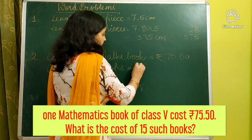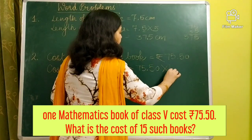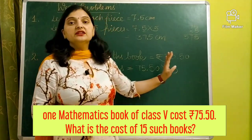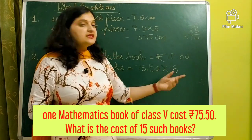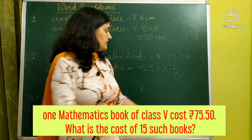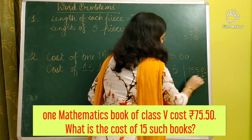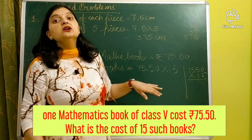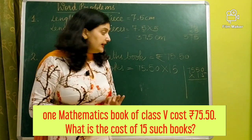We will multiply 75.50 by 15. Once again we multiply a decimal number with a whole number. We ignore the decimal and multiply 75.50 by 15 in our rough part. After that, we place the decimal at the correct place in our answer.